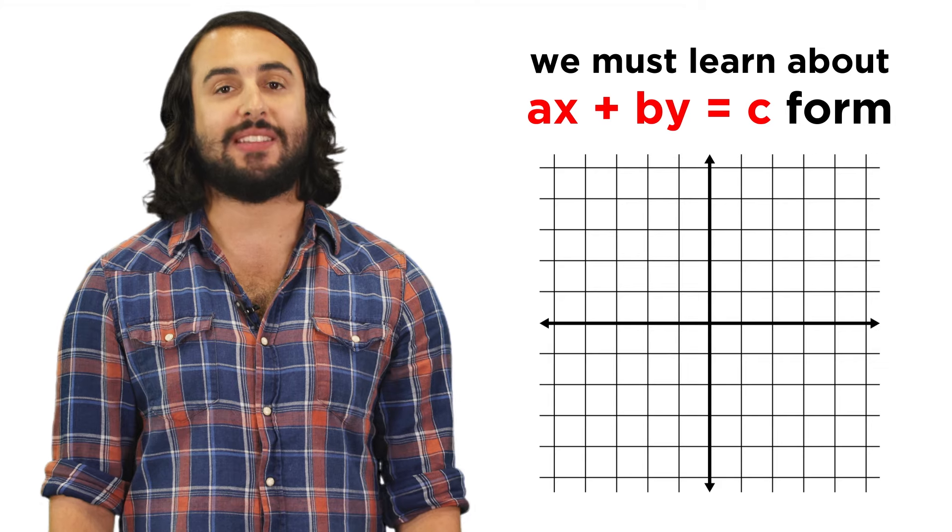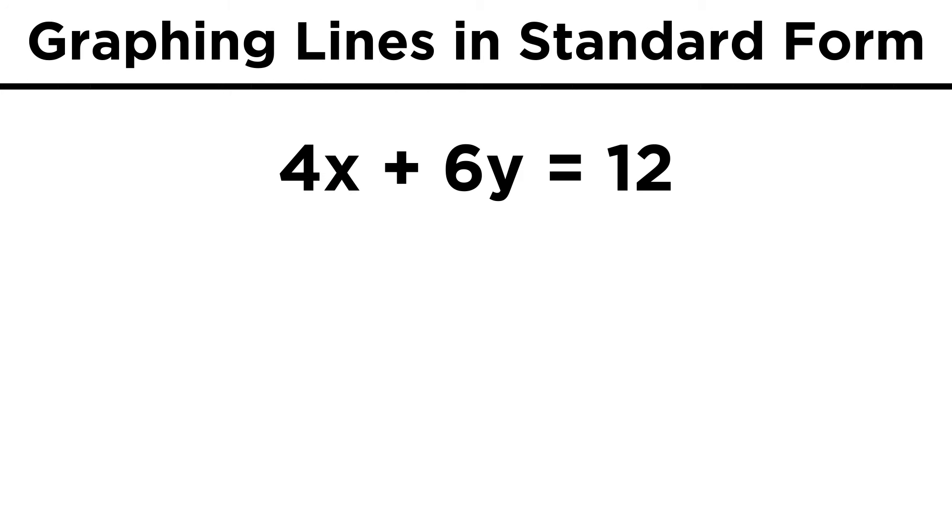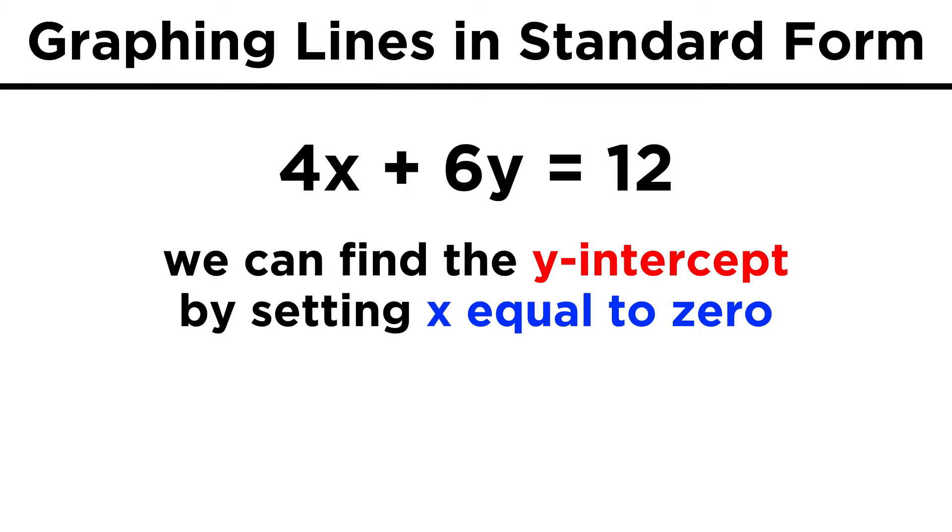To see why it's so easy to graph this way, let's try an example. Say we have four x plus six y equals twelve. Instead of plugging in x values to make a table, let's just rationalize that the y-intercept, or the point where the line crosses the y axis, must have an x value of zero.